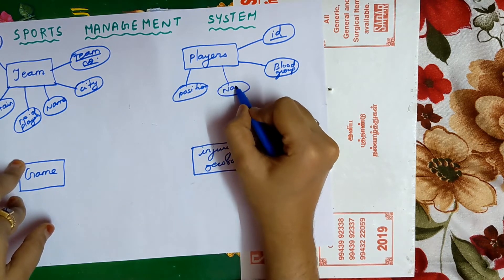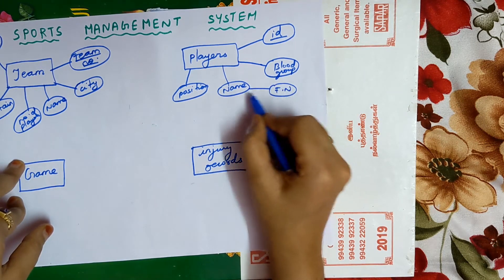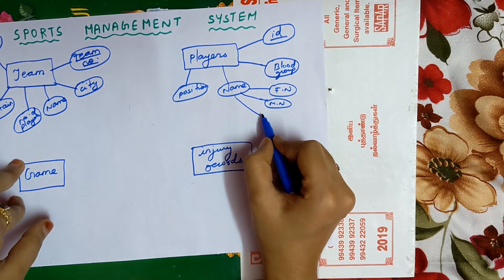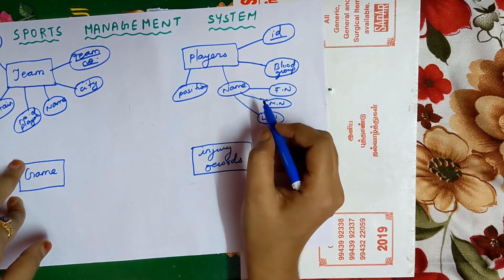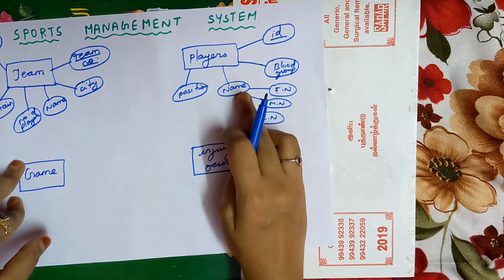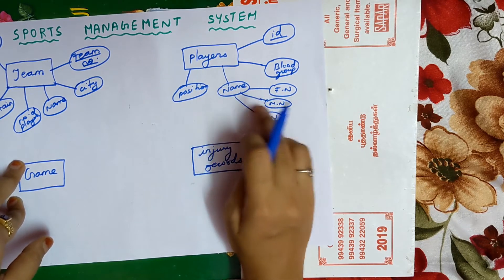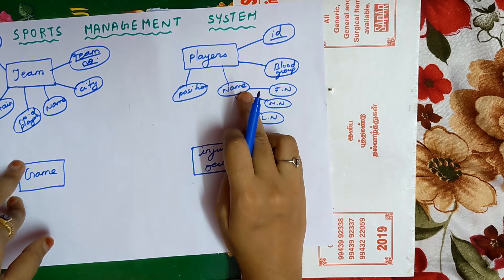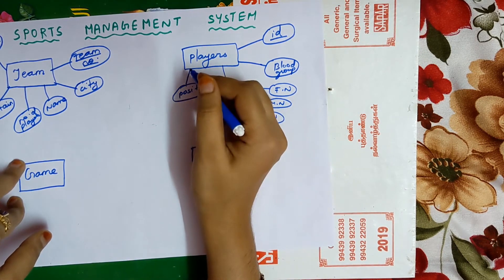The next attribute is name of the player, which can be further divided into first name, middle name, and last name. If you are able to divide an attribute further, it is called a composite attribute. So name is a composite attribute because it can be divided into first name, middle name, and last name.